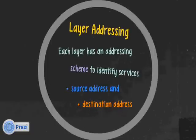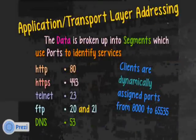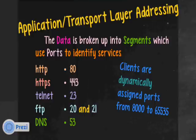Each layer also has addressing — a scheme to identify services and to identify the source address and destination. Source is who's sending or requesting the information, and destination is the address of the service we want to talk to. Starting with the application layer: it has data, and there is no addressing with data.